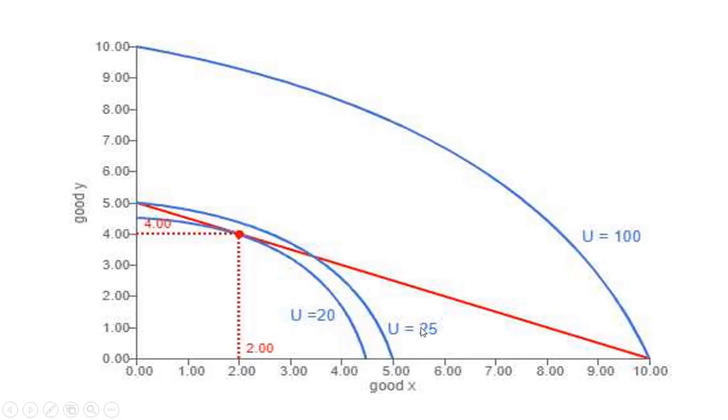All right, so here's a graph of our last example. The red line, this red straight line, is the budget constraint.